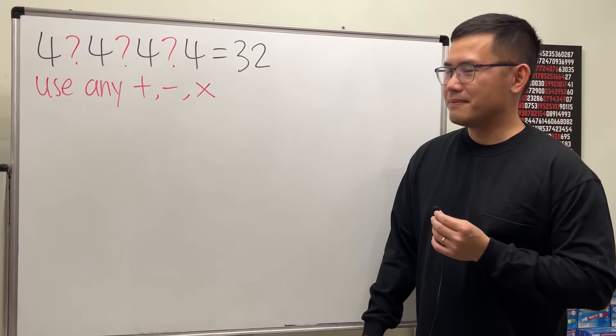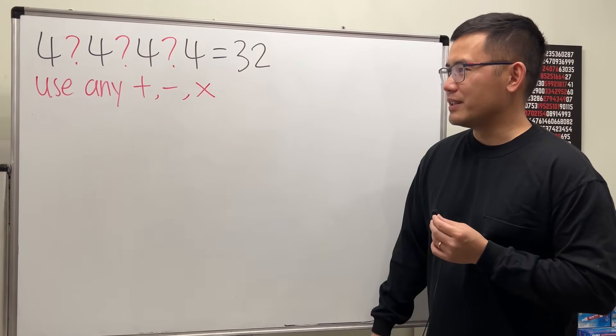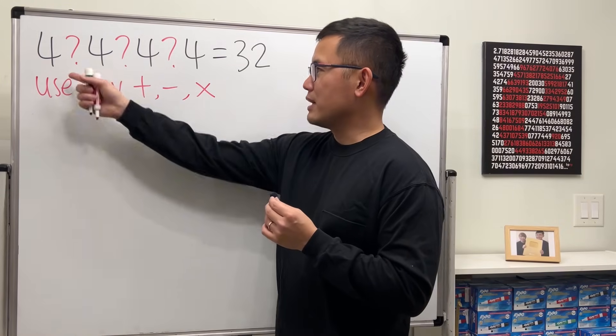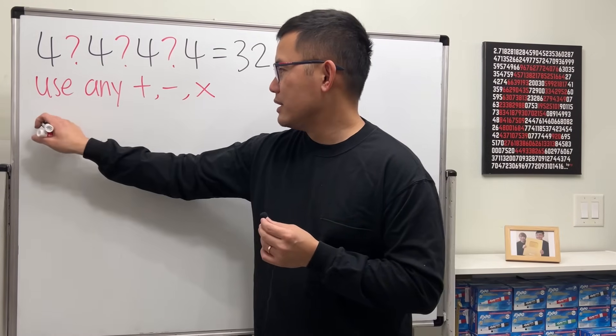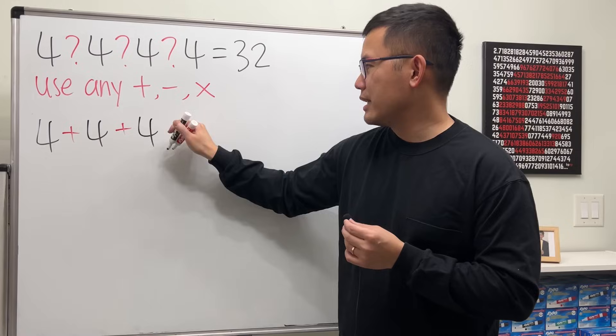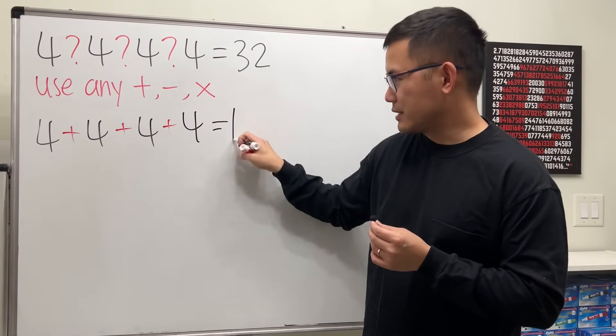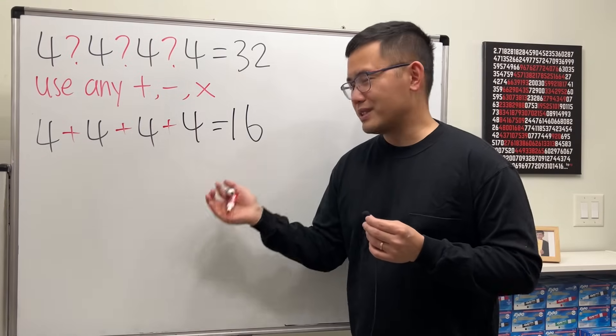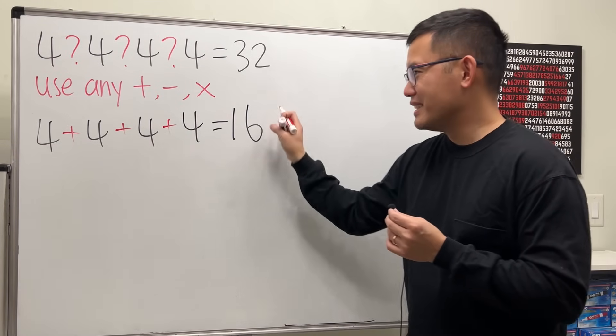I just first put plus into all of them to see what happens. So I get 4 + 4 + 4 + 4, which gives me 16. But of course this is not 32, so that means this is not the correct answer.